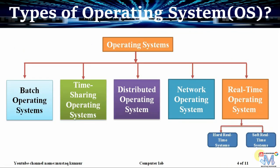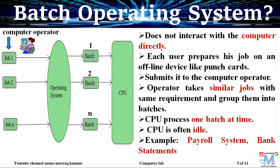Now coming to the types of operating system. It is generally classified into five categories: batch operating system, time sharing operating system, distributed operating system, network operating system, and real-time operating system, also known as RTOS. RTOS is further classified into two categories: hard real-time system and soft real-time system.